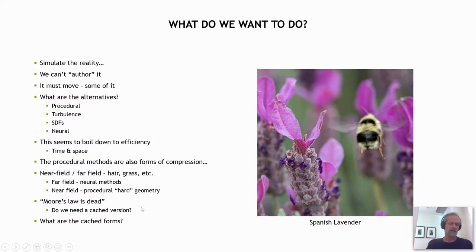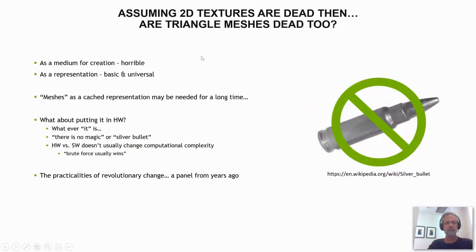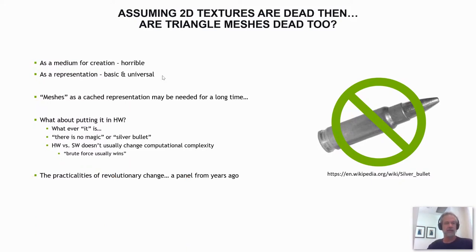We're probably not going to get doublings of performance over the next N years. Are higher-level descriptions sufficient for the current scene, or do we need some sort of caching system? If you do, what form do those things take? As a medium for creation, triangle meshes are horrible — maybe that's a little strong, but lots of people still push triangles around. As a representation it's pretty basic and universal, and at the transistor level they're very efficient. As a cached representation, they're going to have to stay around for a long time.